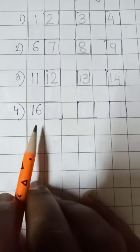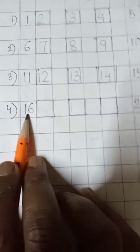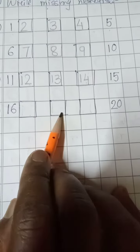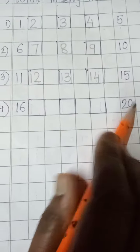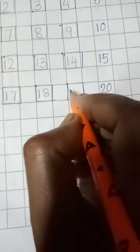Okay, now next one: sixteen, seventeen, eighteen, nineteen, twenty. So sixteen, seventeen, eighteen, nineteen, and last one is twenty.